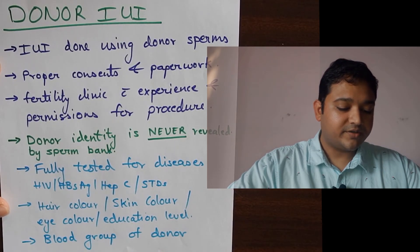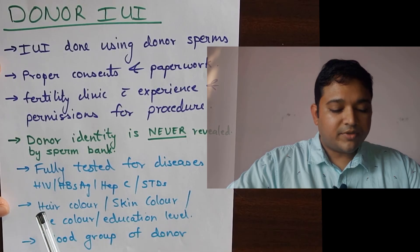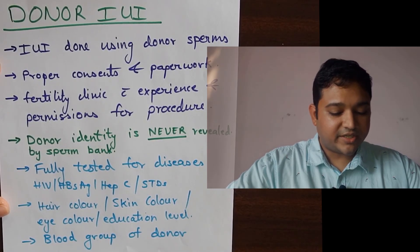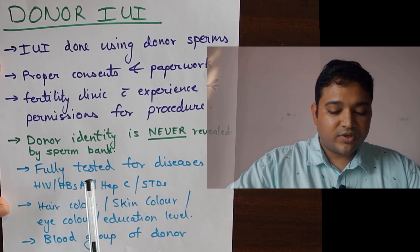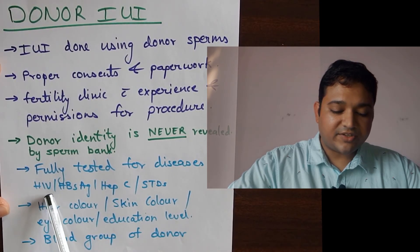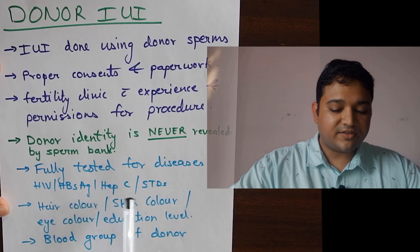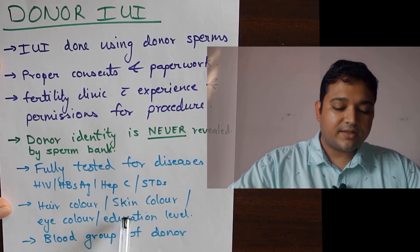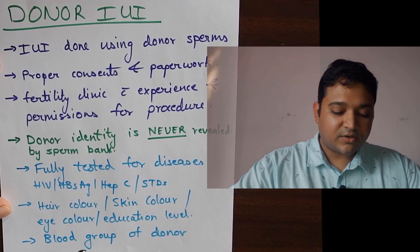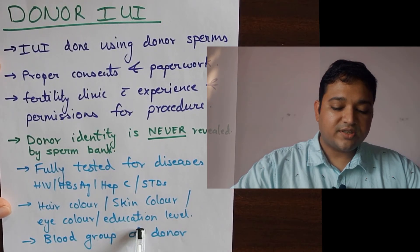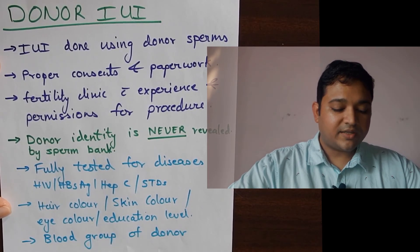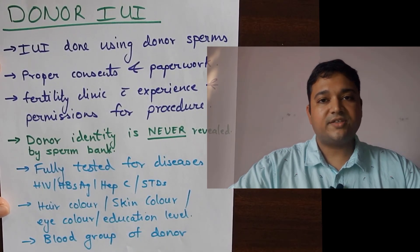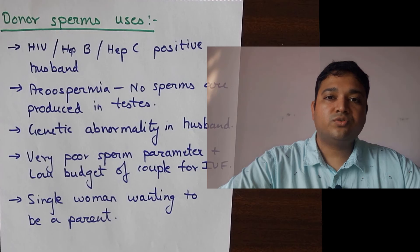What information is revealed about donor sperms? Vital information is shared, such as the fact that the donor sperm is fully tested for diseases like HIV, hepatitis B and C, and other sexually transmitted diseases. The donor's hair color, eye color, skin color, educational level, and blood group are always revealed by the sperm bank.